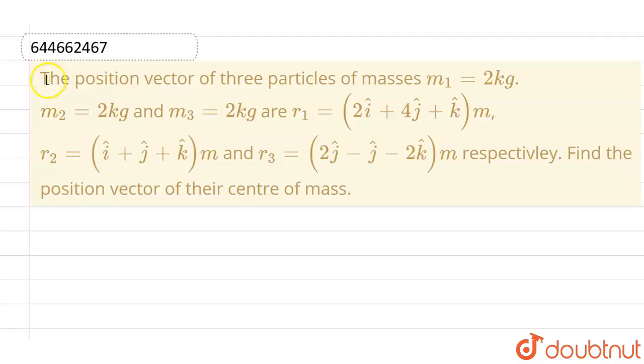Hello everyone. If we talk about this question, the given question is: the position vector of three particles of masses m1 = 2kg, m2 = 2kg, and m3 = 2kg are r1 which is 2i cap + 4j cap + k cap meter,